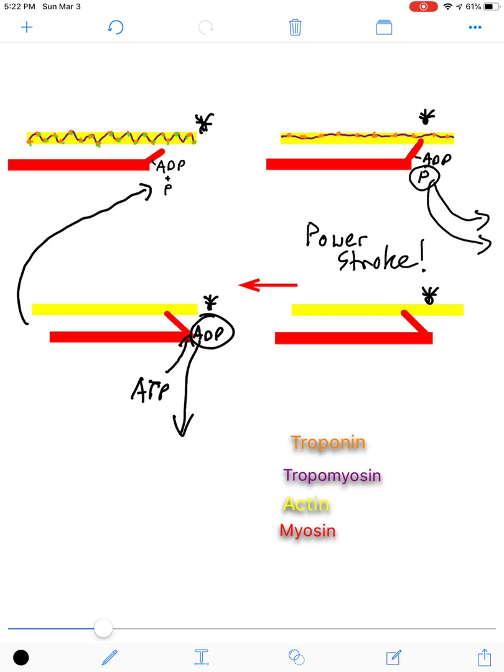Now, something really important here is one cycle, this cycle I just walked you through, moves the filaments about 10 nanometers. That is roughly 1% of the overall contraction that your muscle could possibly do. Now, obviously, this never happens with any contractions we do.